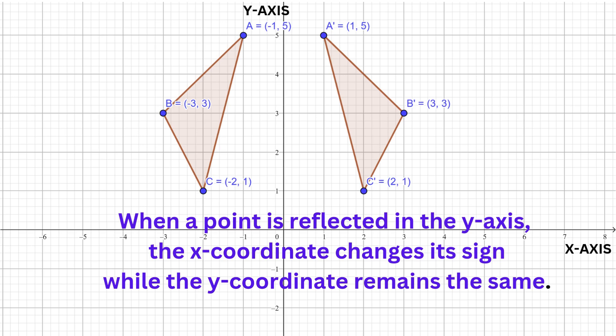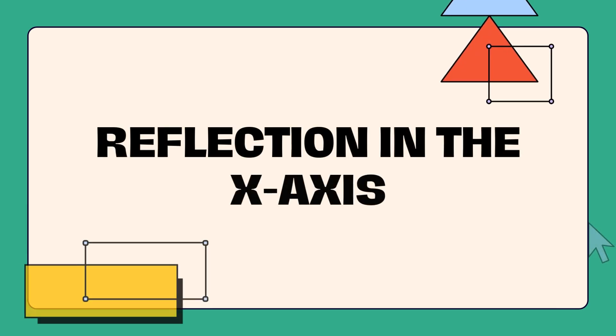Now let's compare the coordinates of the original triangle with those of the image triangle. Notice that the x-coordinates were transformed, or changed to different signs. We can therefore conclude that when a point is reflected in the y-axis, the x-coordinates change their signs, while the y-coordinates remain the same.